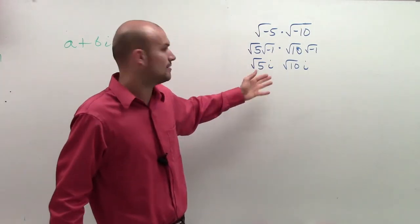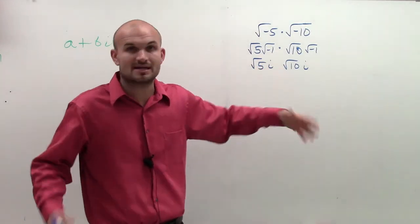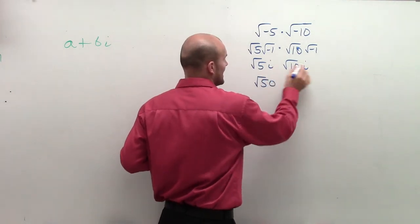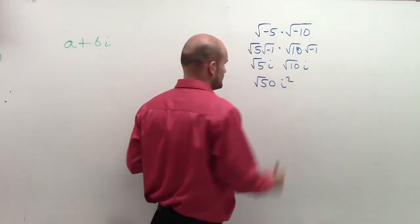Then I multiply just all my numbers. Square root of 5 times square root of 10 is going to be the square root of 50. And i times i is going to give me i squared.